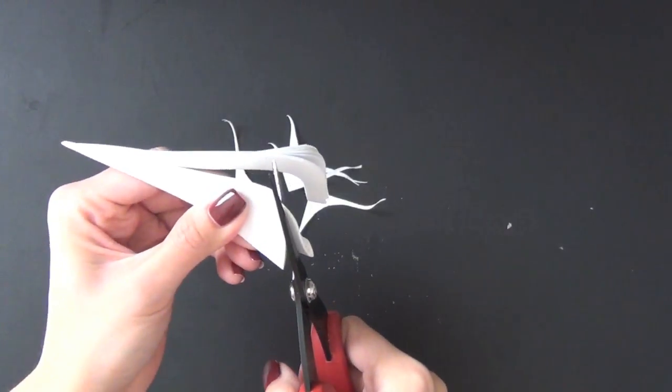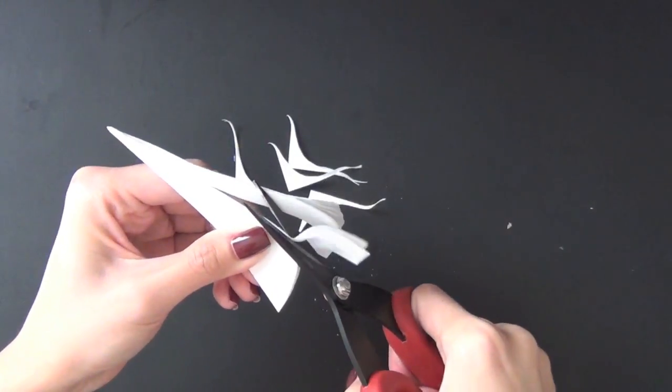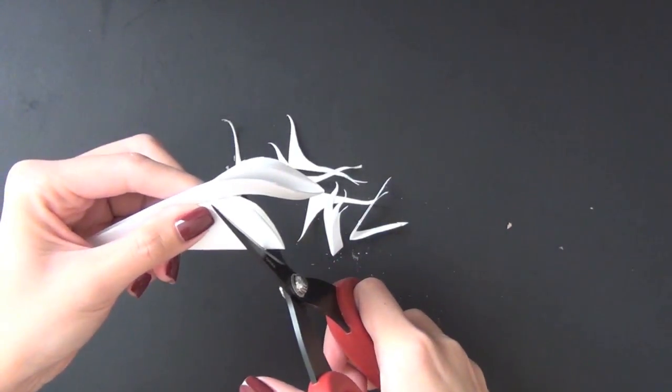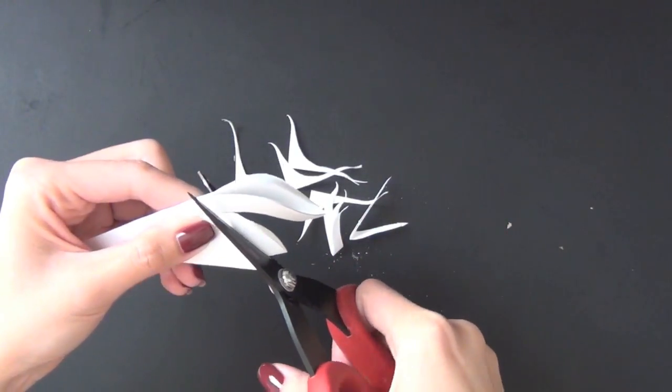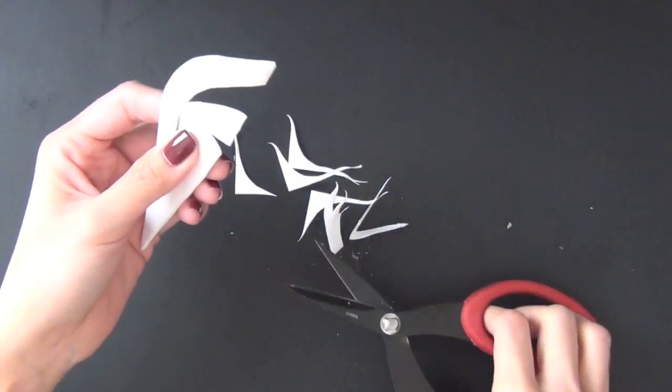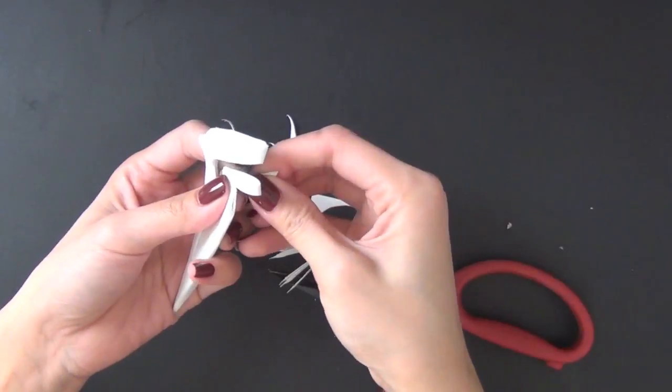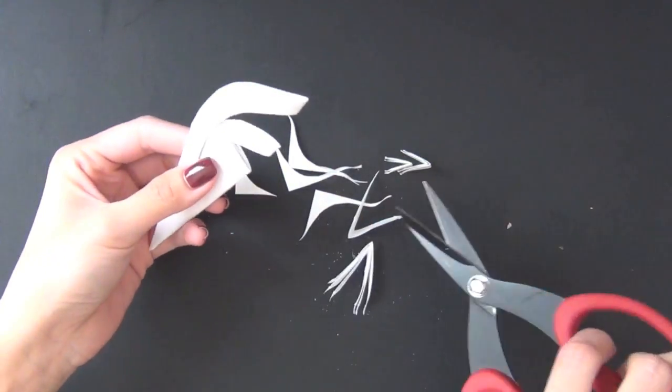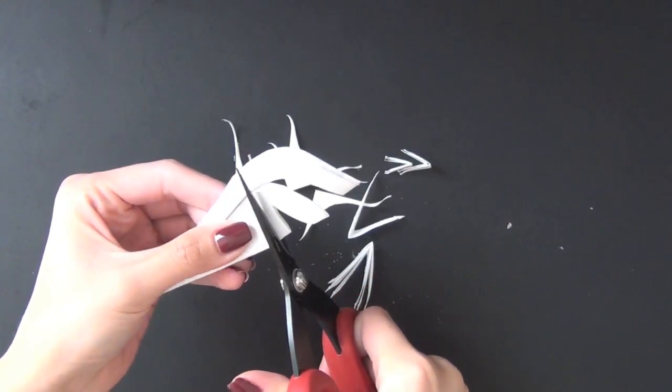So here I'm cutting along the edge, taking off some paper, creating some openings that by the time you open it up will all come together and make it look interesting. You can definitely experiment with just squares or triangles or circle shapes and it will come out really beautiful as well.